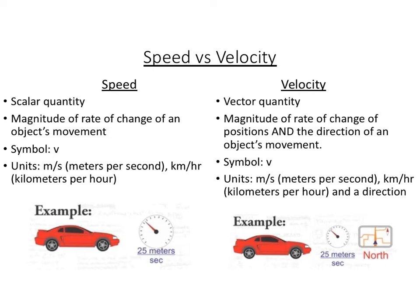Speed is scalar, so no direction. Their symbols are the same, and you see that the type of units that you can have for the magnitude are the same as well. But on velocity, you do have an extra thing that you need for direction.